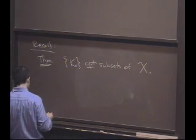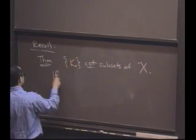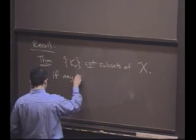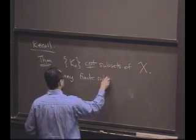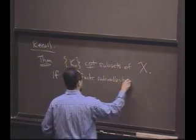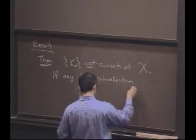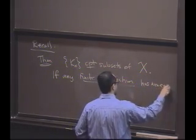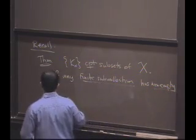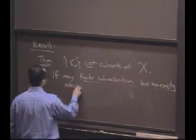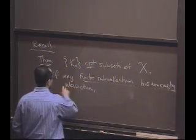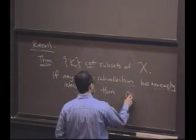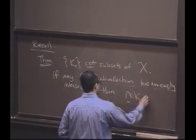And let's say that you have the certain property that's true. If any finite subcollection of these sets has a non-empty intersection, then, in fact, the intersection of all the sets is not empty.